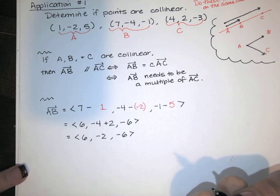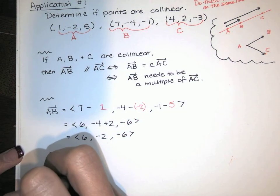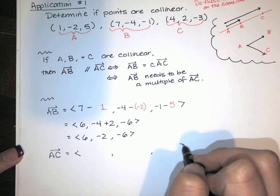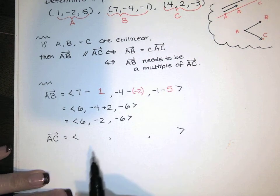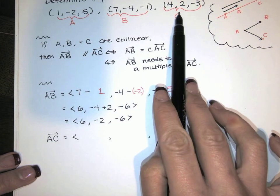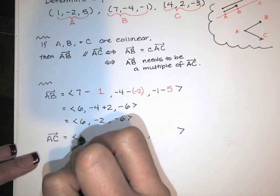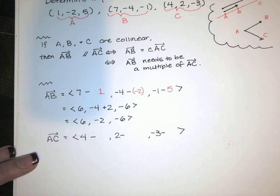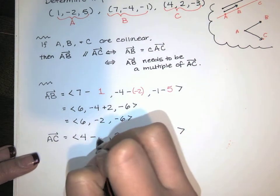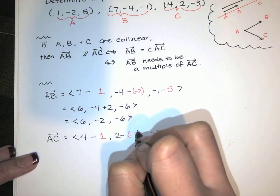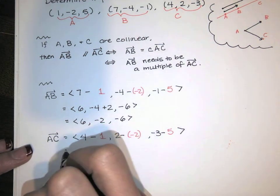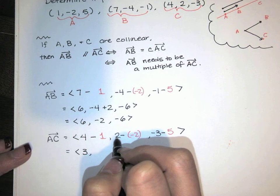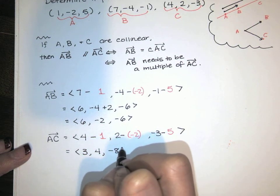Now we're just going to calculate AC. Same thing — terminal minus initial. We end up at C which is (4, 2, -3), and we subtract A which is (1, -2, 5). That gives us 3, then 2 minus negative 2 is 4, and negative 3 minus 5 is negative 8. So vector AC is (3, 4, -8).